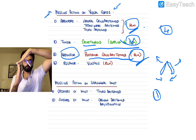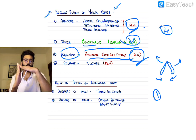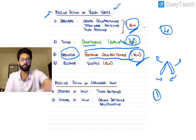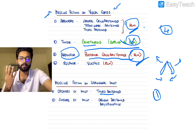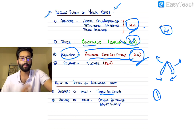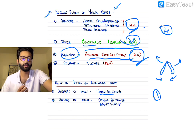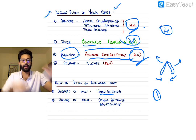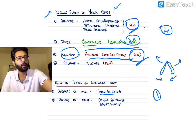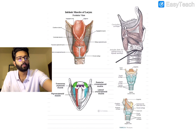Lastly, muscles acting on the laryngeal inlet: there are muscles that open the laryngeal inlet by pulling the aryepiglottic fold up, and muscles that close the laryngeal inlet. The opener is the thyroarytenoid, and the muscles that close the laryngeal inlet include the oblique arytenoid and the hyrepiglotticus.